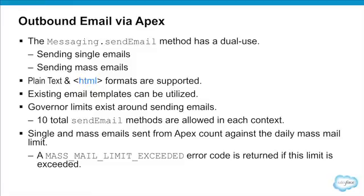There are governor limits. Much like we can do 10 web service call outs and 10 calls to asynchronous Apex, we can do 10 calls to the send email within a single transaction. The send email method receives a list of these email objects, so don't think this means you can only send out 10 emails. One call to the send email method can contain many emails, and each email can have many recipients.